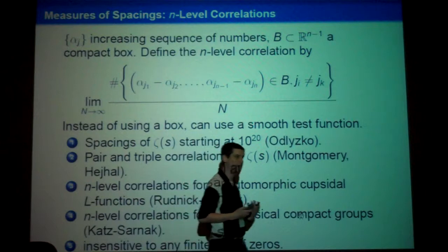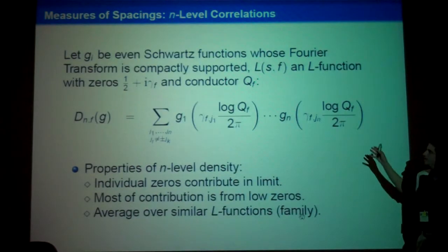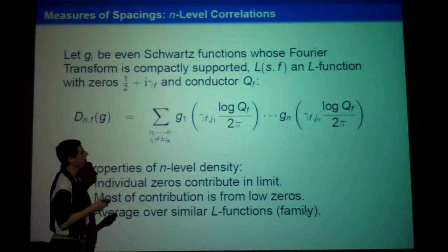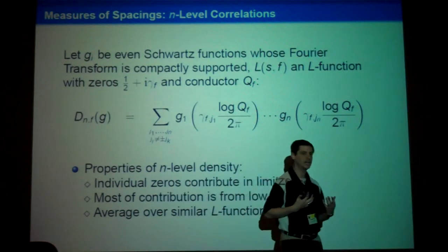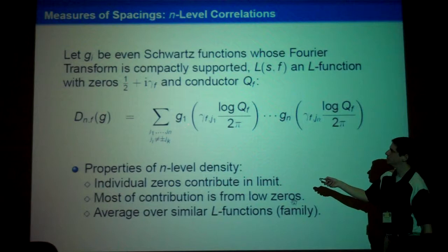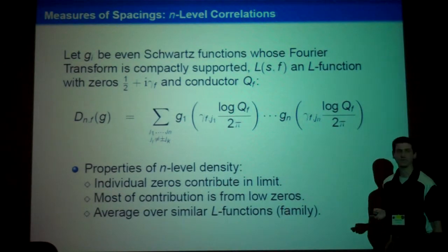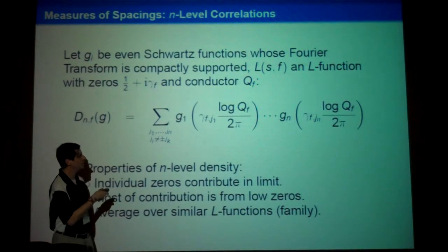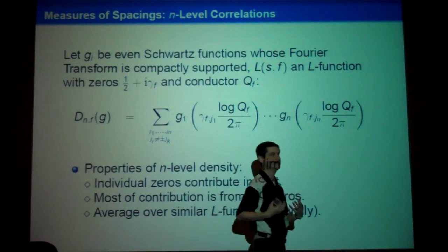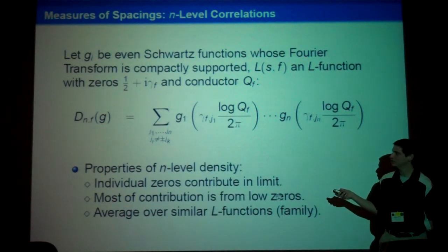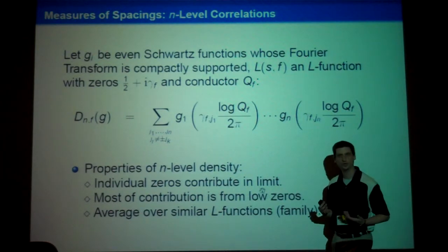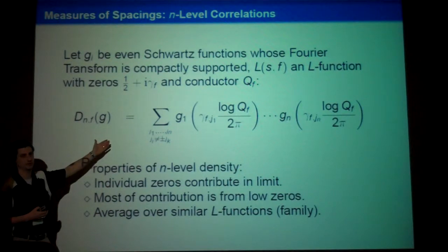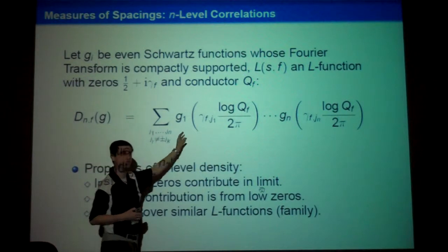We need another statistic — another way of looking at what's going on near the central point. The statistic I want to talk about is the n-level density. I have some L-function L(s,f); Q_f is the analytic conductor; its logarithm tells me how to renormalize the zeros near the central point so that I have mean spacing 1. I take some Schwartz functions and sum my scaled zero values. For technical reasons the best approach puts a restriction that j_i is not plus or minus j_k, which leads to a cleaner object for comparisons with random matrix theory.